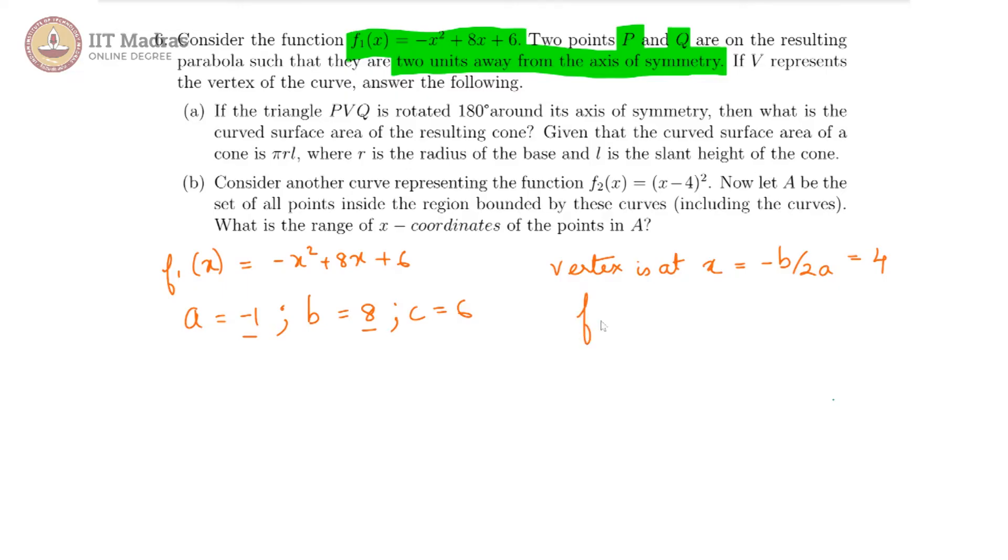And the function's value at 4 is minus 4 square which is 16, plus 8 times 4 which is 32, plus 6, that gives us 22. So the vertex is 4 comma 22.